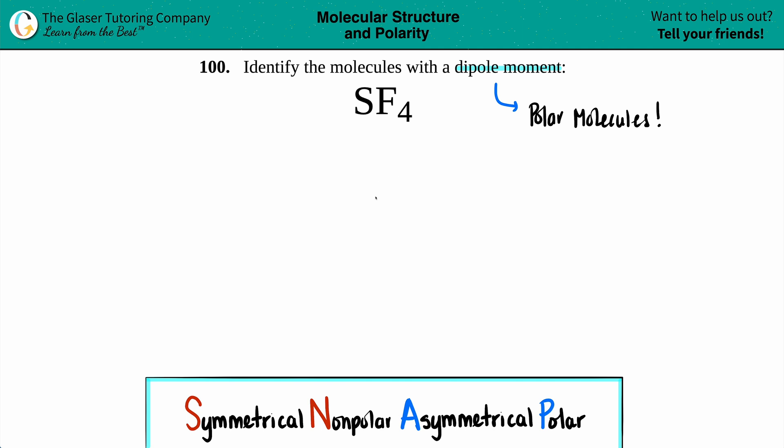So to draw this, we have sulfur in the middle because fluorine is the most electronegative element, so it can't be in the middle. And then I'm just going to draw four fluorines around the sulfur. Maybe one, two, three, and four. It does not matter where you put the fluorines. You could have put them one, two, three, and four. Maybe I'll do that just to kind of go with the flow. So one, two, three, and four.